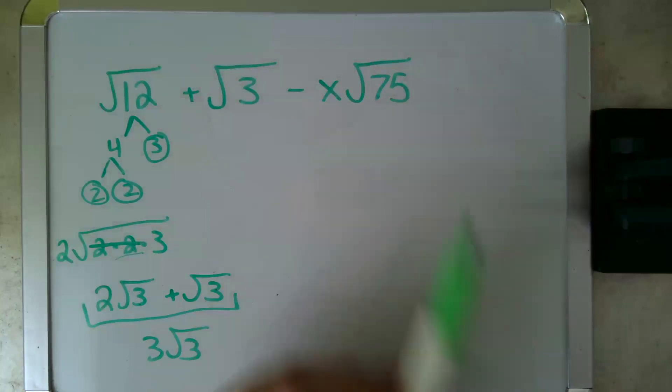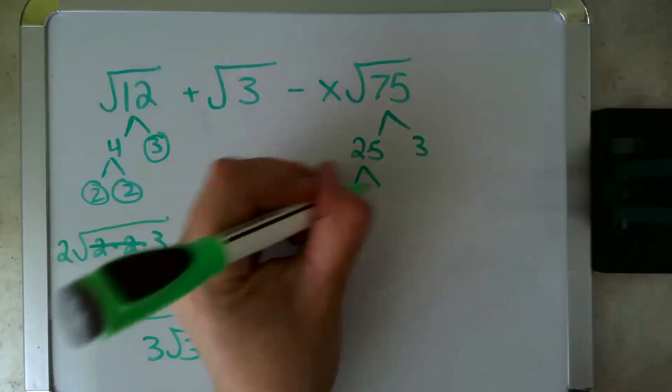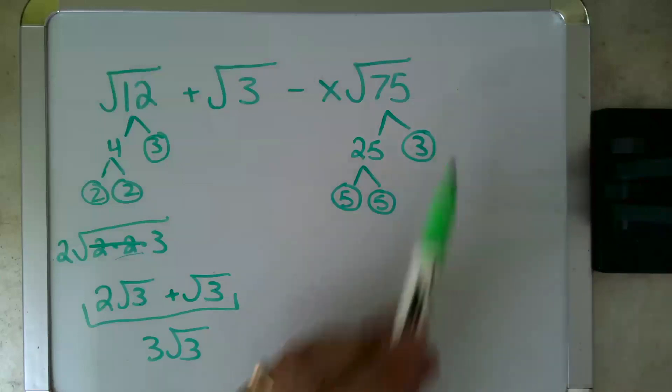And now let's go up here and let's start to factor our 75. Well, 75 factors into 25 and 3, and 25 further factors into 5 and 5, so there are my primes.